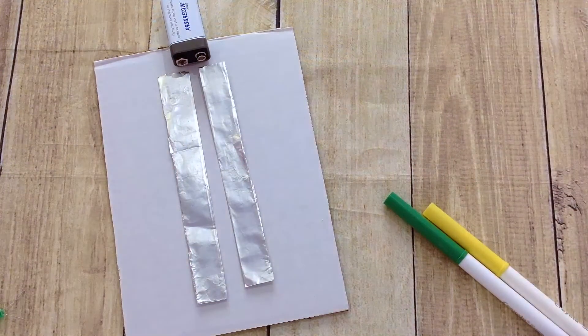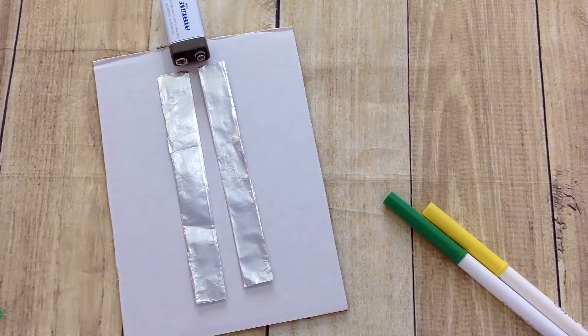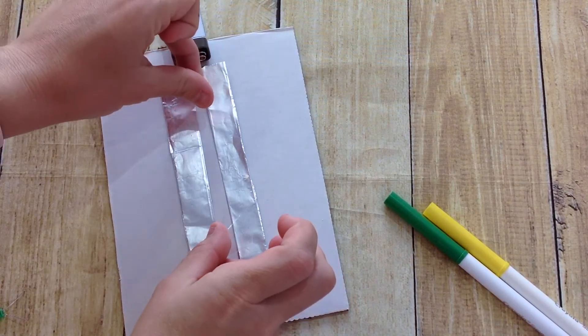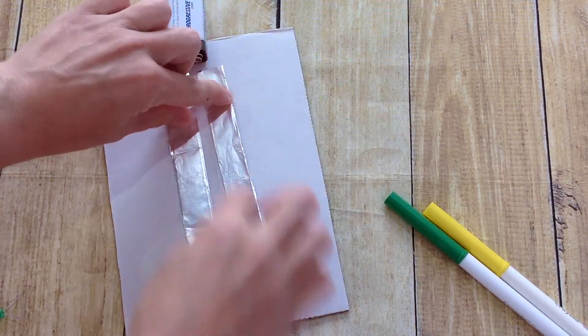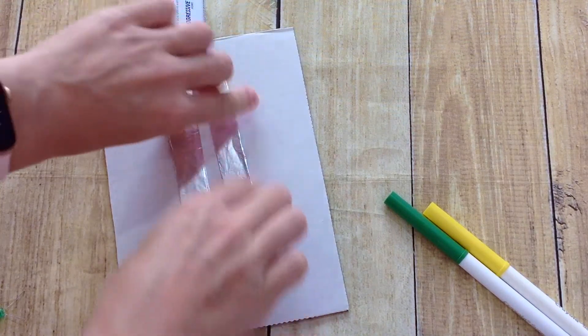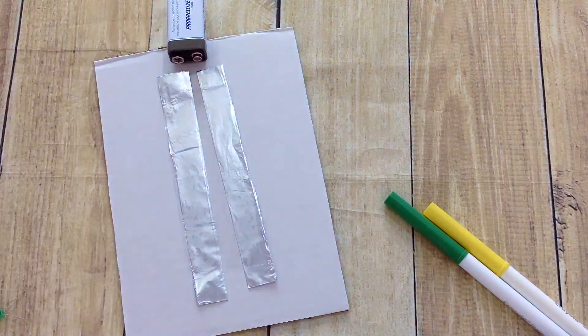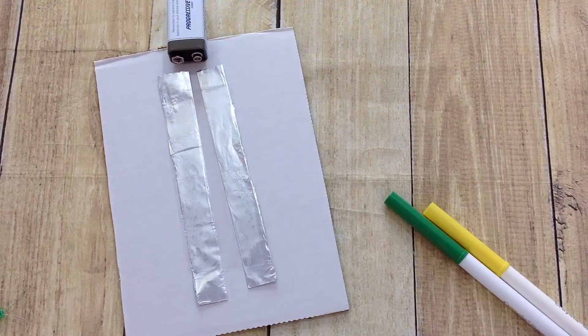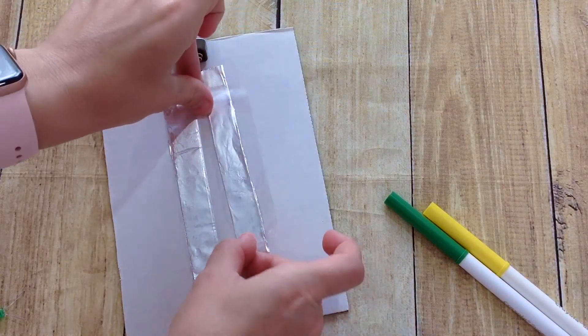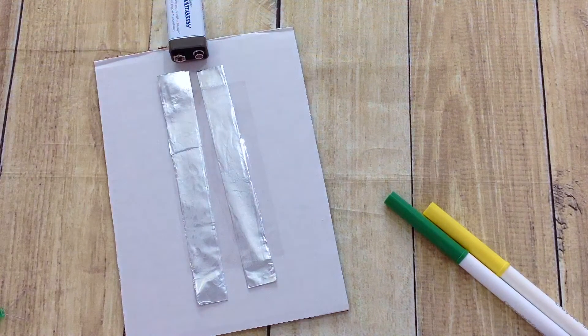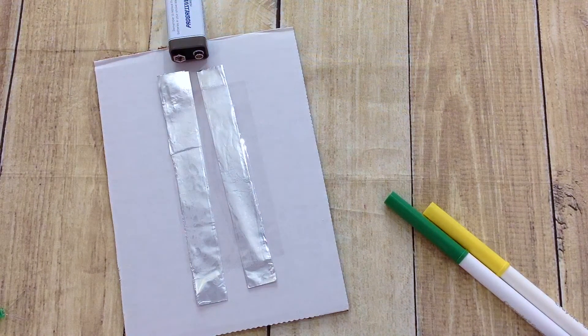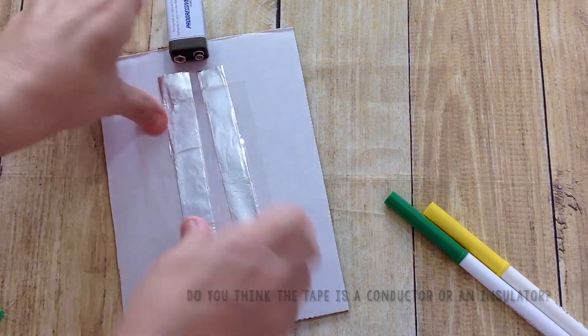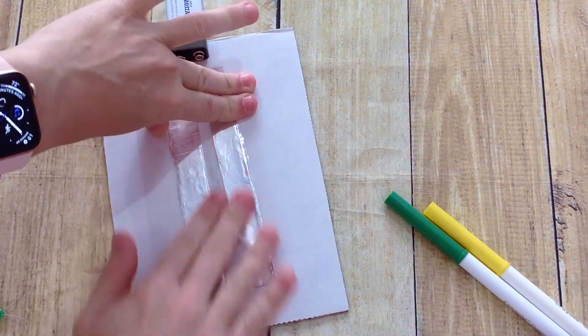Next, we're going to secure our wires to our cardboard using packing tape. I always start by putting a piece right down the middle so that both pieces are secured to the board. You're probably going to need a couple of pieces. I always find the tape is not quite wide enough, so I add another piece to the right side and a third piece to the left side. This will keep my circuit from moving around while I'm testing my objects.